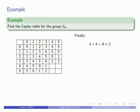4 plus 4 is 8, which is congruent to 2. 4 plus 5 is 9, congruent to 3. 5 plus 5 is 10, which is congruent to 4.